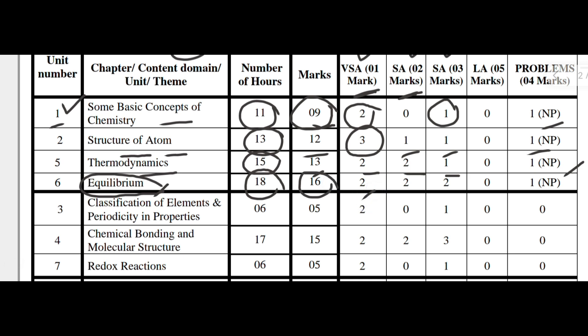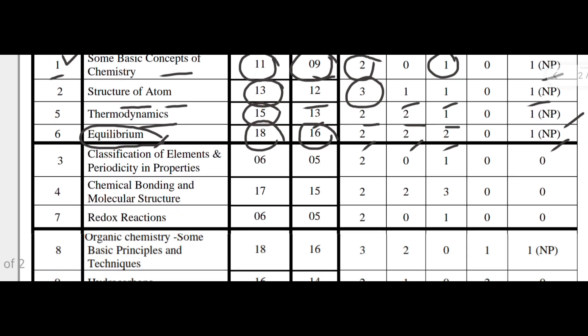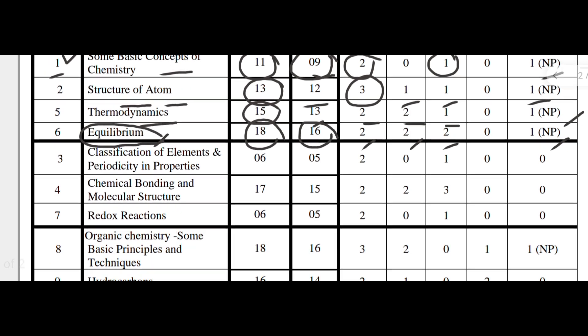Next is 'Classification of Elements and Periodicity in Properties,' with six teaching hours and five marks — two VSA and one SA of three marks.